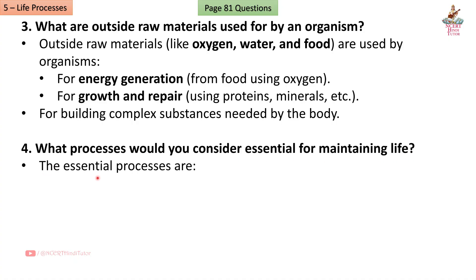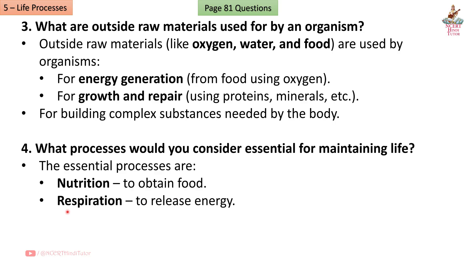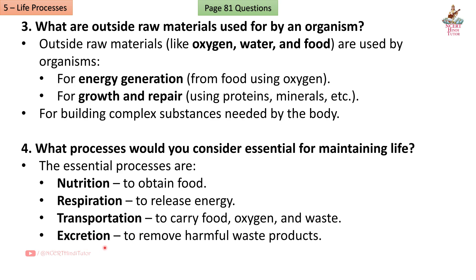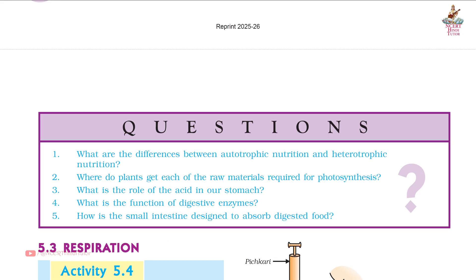Question 4: What processes would you consider essential for maintaining life? Answer: The essential processes are nutrition to obtain food, respiration to release energy, transportation to carry food, oxygen and waste, and excretion to remove harmful waste products.